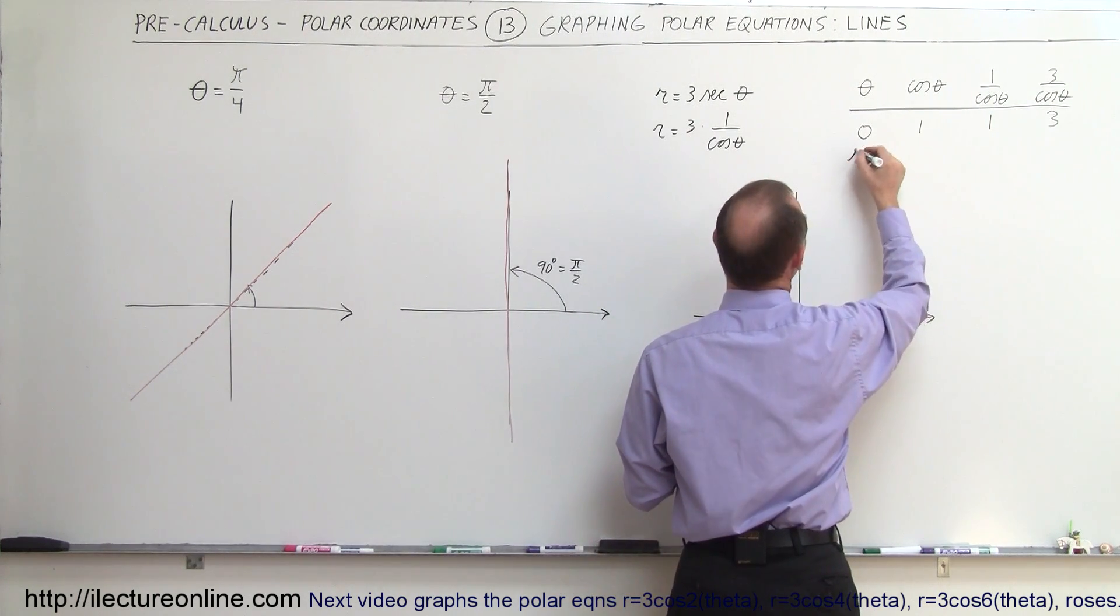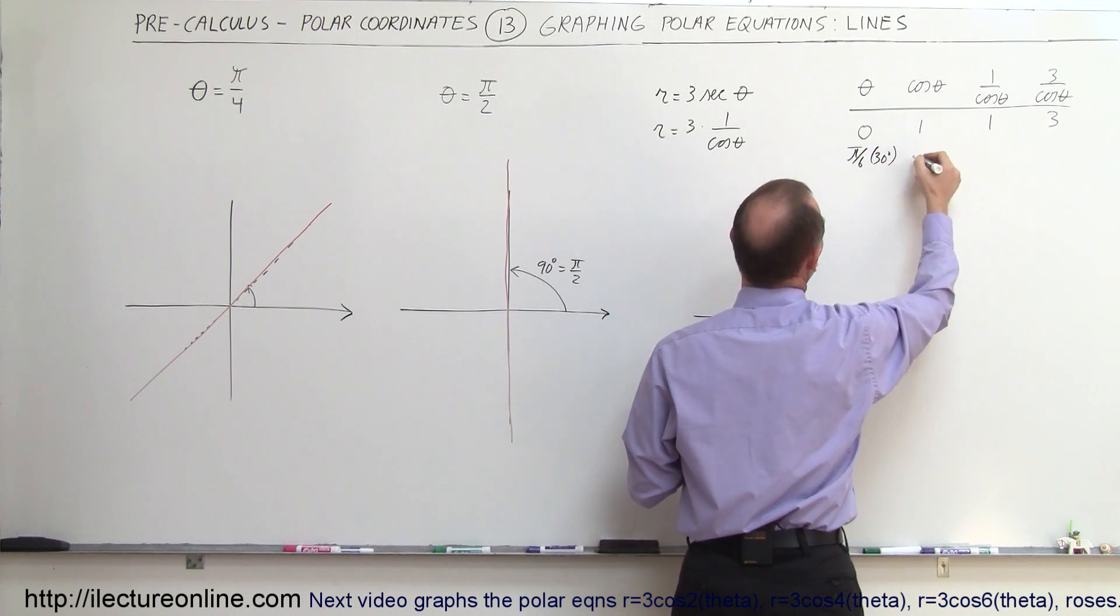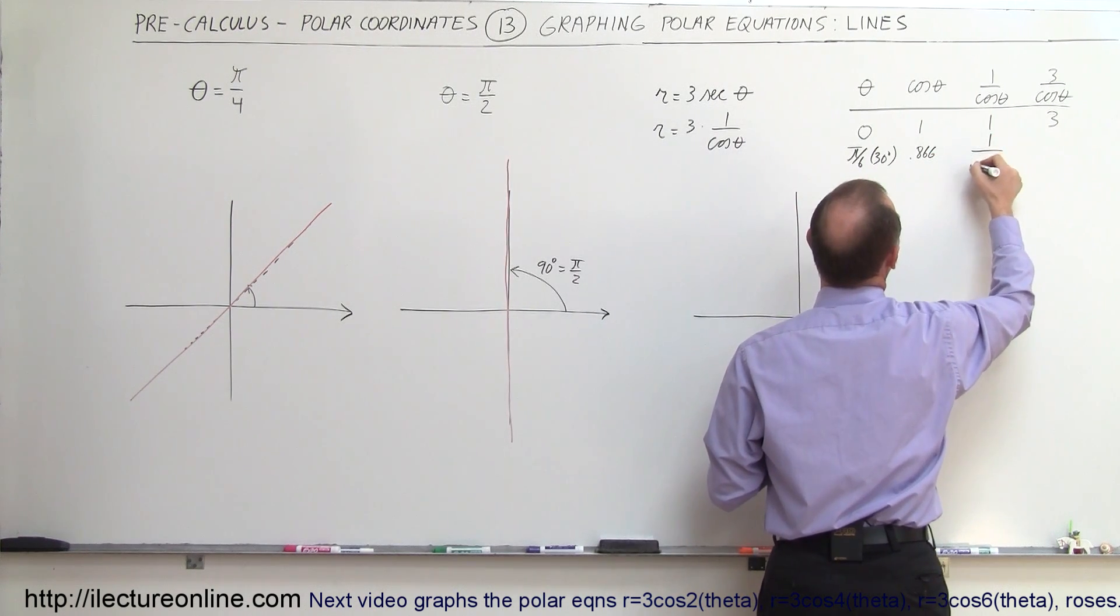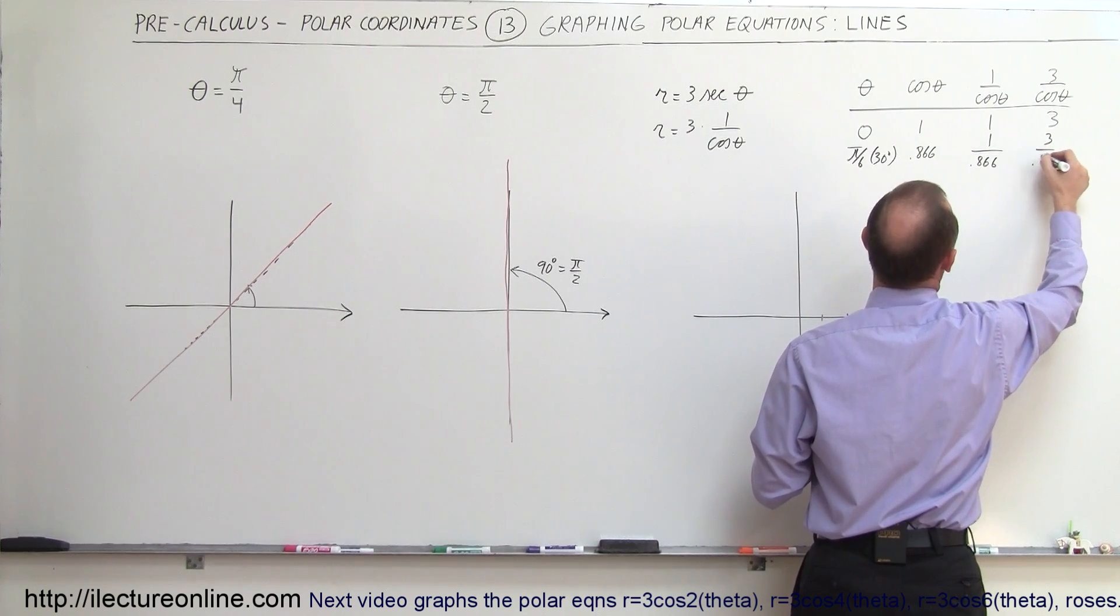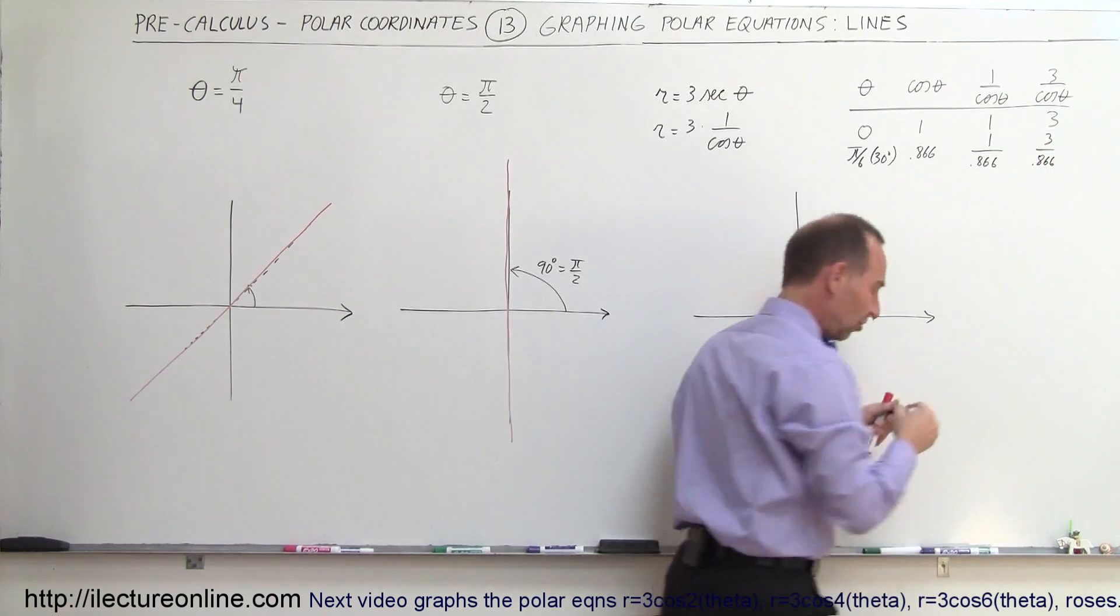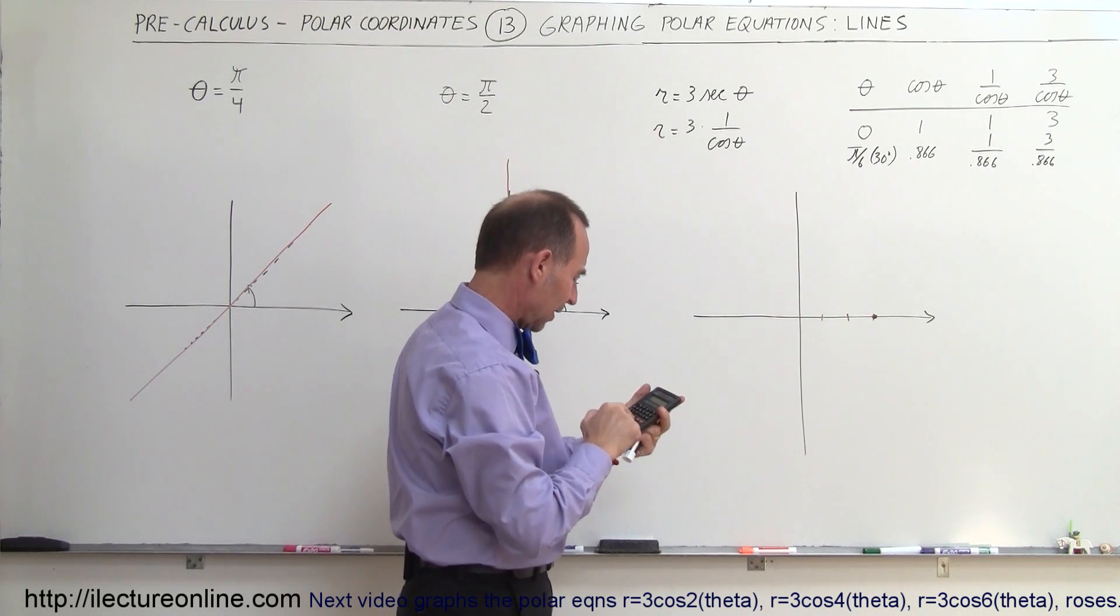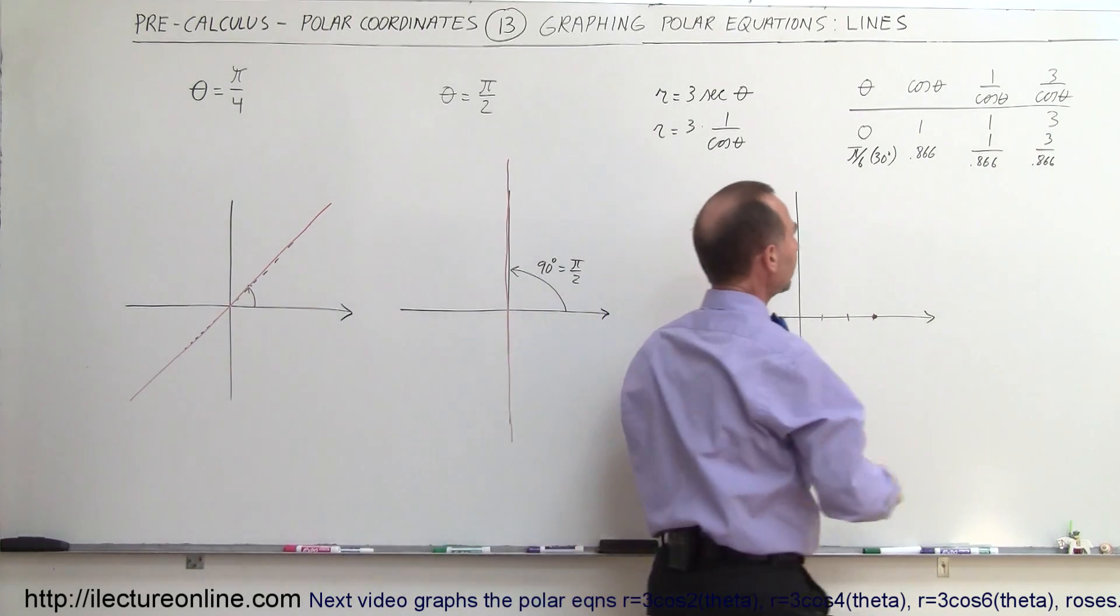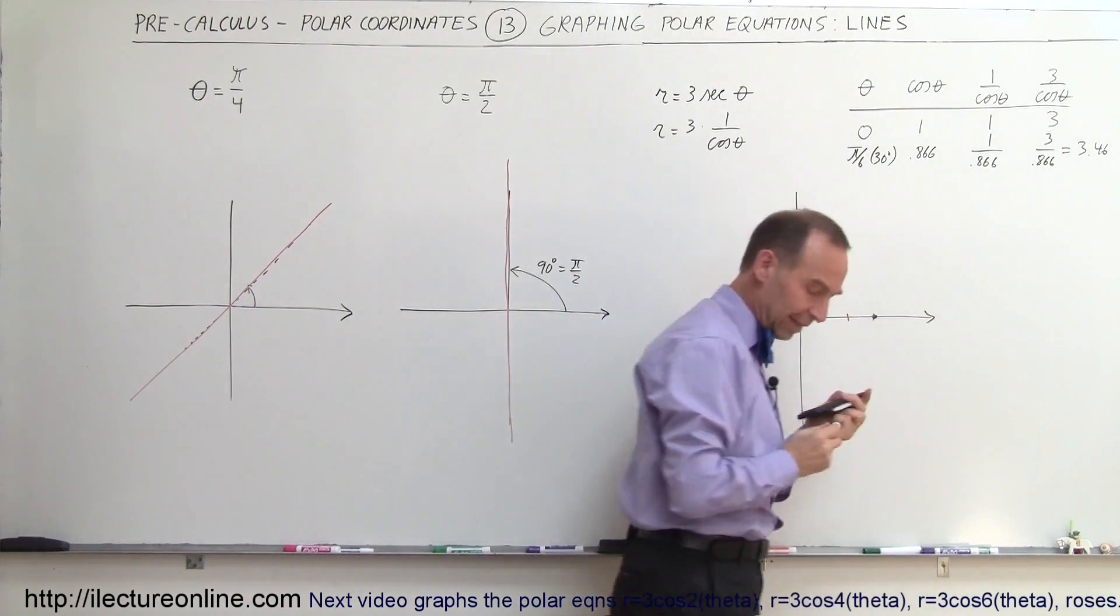Now let's try pi divided by 6, which is 30 degrees. The cosine of that is 0.866. That would be 1 over 0.866, and then we multiply times 3. So 3 divided by 0.866, which is about 3.46.